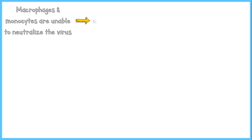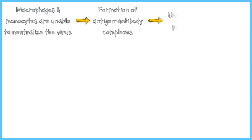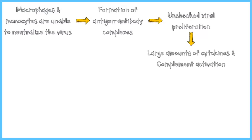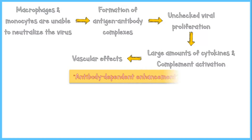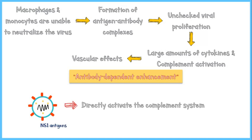However, as the serotype is different from the previous infection, macrophages and monocytes are unable to halt the infection. Instead, they form antigen-antibody complexes and the virus continues to proliferate unchecked. This results in the production of large amounts of cytokines and complement system activation, which are the main causes of extensive vascular effects in severe dengue — a process called antibody-dependent enhancement. Additionally, the non-structural protein 1 (NS1) antigen of the virus can directly activate the complement system, further contributing to the vascular effects.